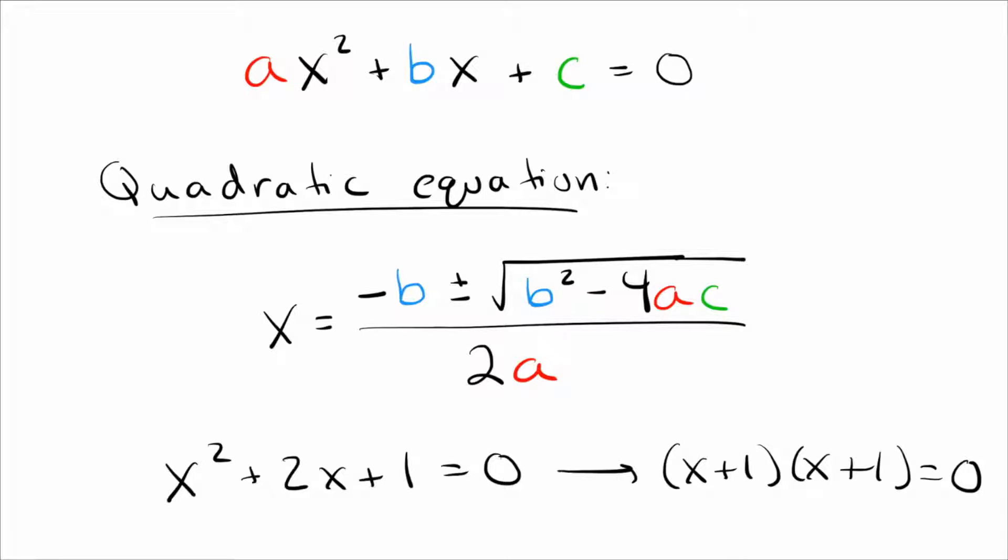However, it's not always the case that you can factor what you get. So what you probably learn in class is if you can't factor it, you should use the quadratic equation. So today we'll show where does this quadratic equation actually come from. And the simple answer is it comes from completing the square.